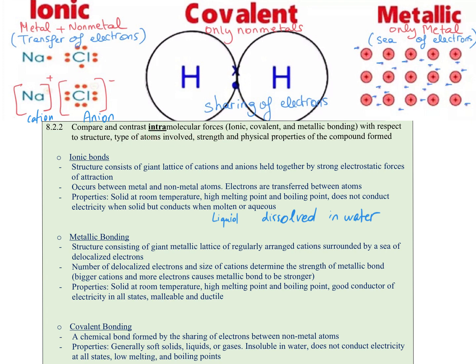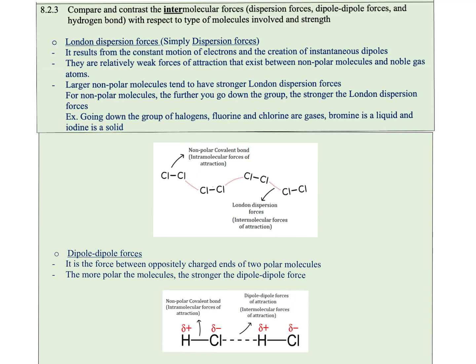To wrap it up, we have three types of intramolecular forces: ionic bonds, metallic bonds, and covalent bonds. In this learning objective, we compare and contrast them with respect to type of molecules involved and strength. We also have three types of intermolecular forces. To start with London dispersion forces, they are intermolecular forces of attraction that result from the constant motion of electrons and the creation of instantaneous dipoles. They are relatively weak forces that exist between nonpolar molecules and noble gas atoms.